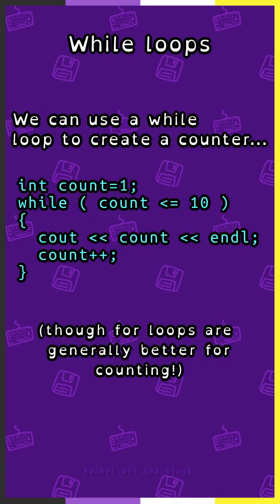We can use a while loop to create a counter, such as initializing an int count to 1, and having while count is less than or equal to 10, cout count, and then add 1 to count each iteration. Though, for loops are generally better for counting.